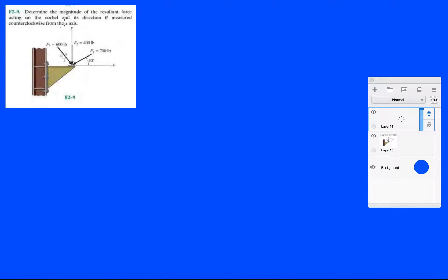Determine the magnitude of the resultant force on this core bell. Let's first make a prediction - everything seems to be pushing it downwards, and it looks like the force F1 might win as to pushing it to the left. So maybe a resultant force down and to the left.